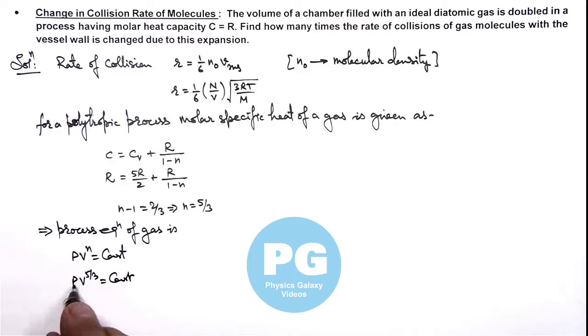So in this situation if we substitute p as n r t by v, this becomes t v to power 2 by 3 is constant, or this gives t is equal to some constant times v to power minus 2 by 3.